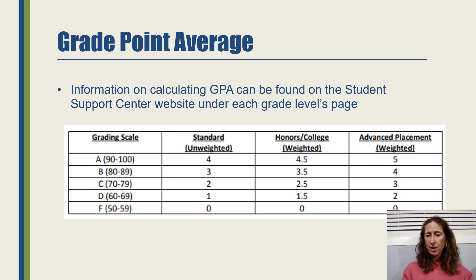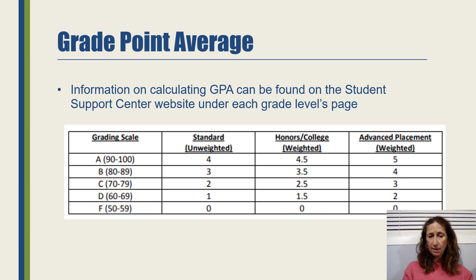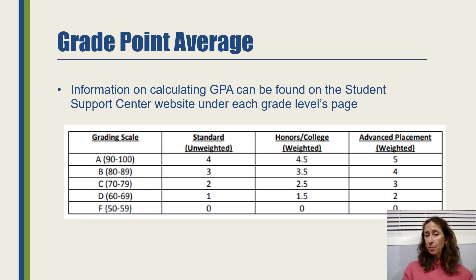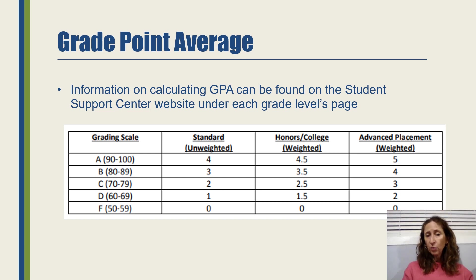Here's another way to look at the grading scale and the number of points it yields. A standard class A counts four points. If you take an honors class, that A counts 4.5 points. If it was an AP class or a dual enrollment class, an A counts five points. So honors and AP classes count more on your GPA calculation — but they also hurt you more if you don't do as well as you thought you would.